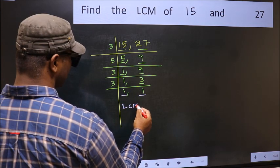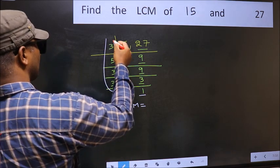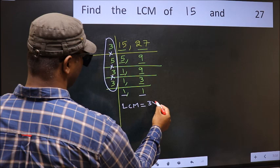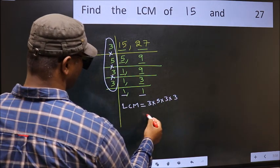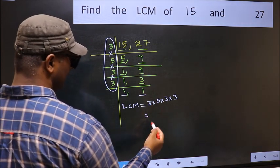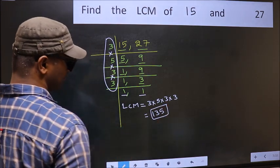So our LCM is... LCM is the product of these numbers: 3 times 5 times 3 times 3. When we multiply these numbers, we get 135 as our LCM.